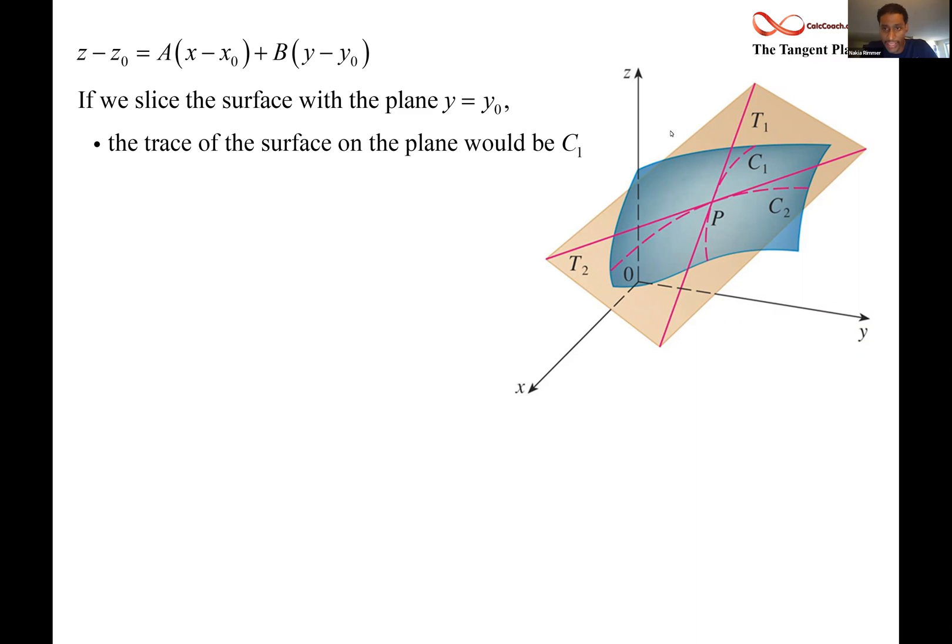Now, the line that's there, T1, is tangent to the curve. And at the same time, it lives in the tangent plane. The tangent plane is the yellow parallelogram looking shape there. So we have our surface and then we have the tangent plane. And this curve here is on the surface. This tangent line T1 is tangent to the curve and in the tangent plane at the same time.